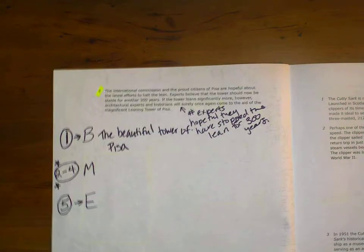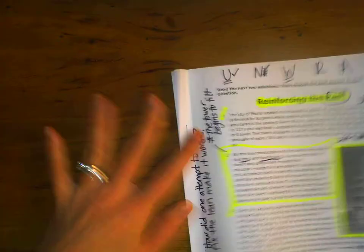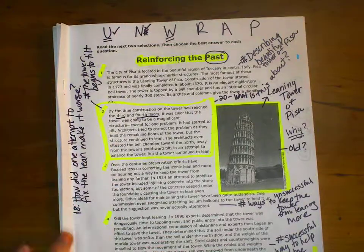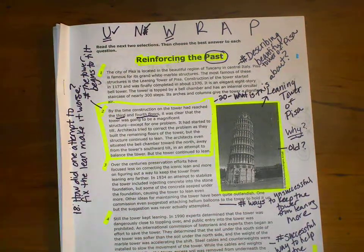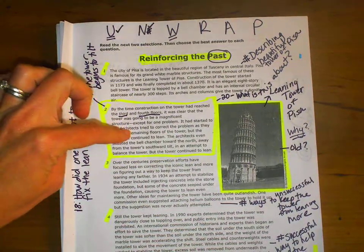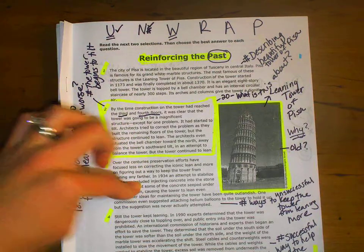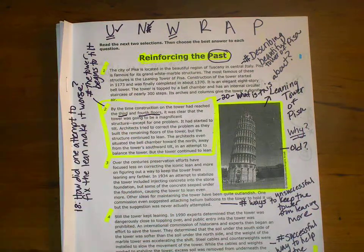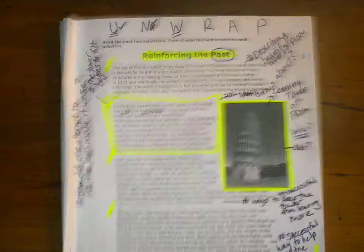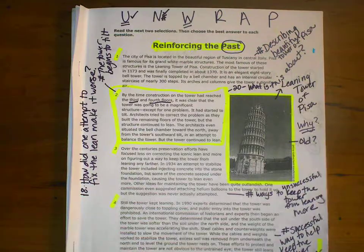And the middle, paragraphs 2 through 4, were all about efforts to fix the lean. They tried the bell. They tried injecting concrete. They even thought about doing helium balloons, but didn't try it. Until then, they found a real way to correct, to stop it. They didn't correct the lean, but stopped it from leaning more. So, for the middle, I'm going to say efforts were made to first correct the lean,